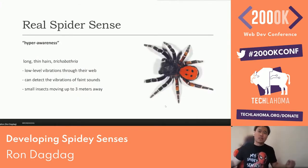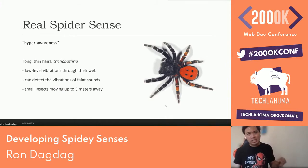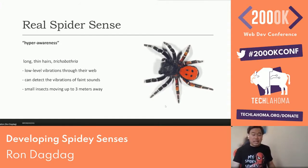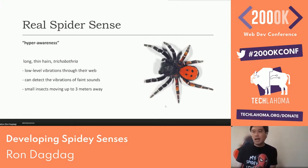Before Spider-Man's Spidey senses, the real spider-sense comes from actual spiders — we call it hyper awareness. They have long thin hairs called Trichobothria that can detect low-level vibrations through their web. They can even detect sounds and small insects moving up to three meters away. Spiders are really amazing creatures.